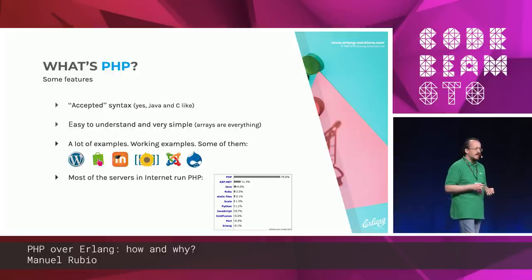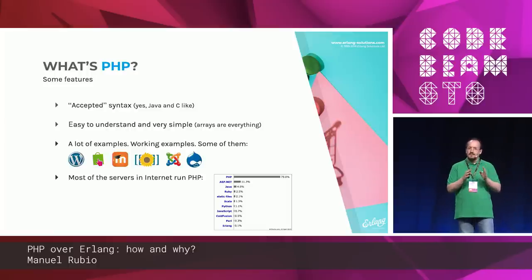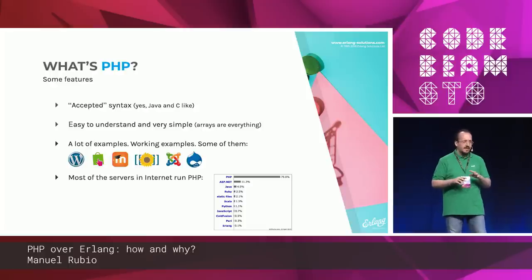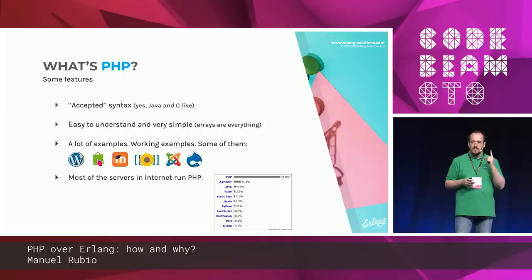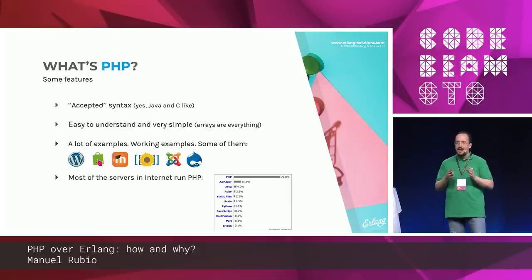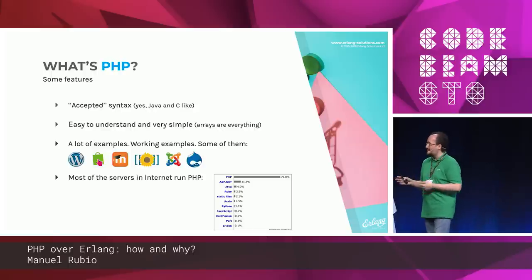PHP is simpler than Python, Ruby, or Perl, because when you use those languages you're thinking about dictionaries, arrays, hashes — a lot of different structures implemented in different ways. But in PHP, you only have arrays. You can develop everything with arrays — you can put hashes inside arrays, create objects from arrays — you can do everything with arrays.